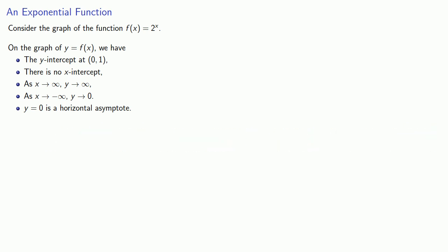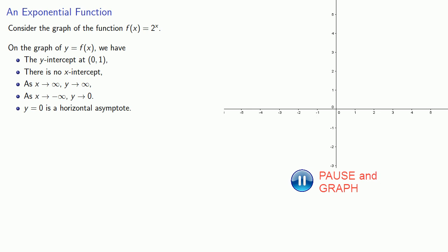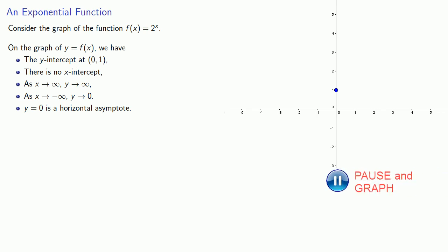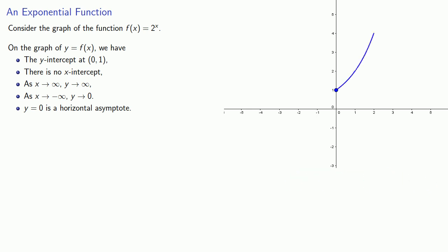So we'll sketch a graph that has a y-intercept at (0, 1), no x-intercept, which means we never cross the x-axis. As x goes to infinity our y values get larger as well, and as x goes to minus infinity our y values go to 0.